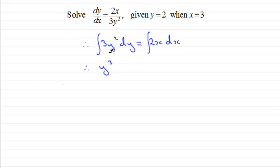So therefore, we've got y cubed. And we're going to have a constant of integration, which I'll call plus A. And then when it comes to integrating 2x with respect to x, we get x squared. And we're going to have a constant of integration for this one, which I'll call B.